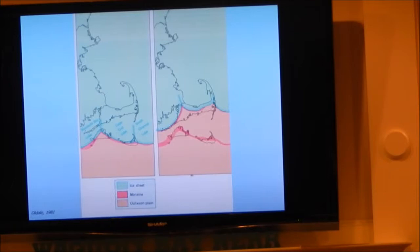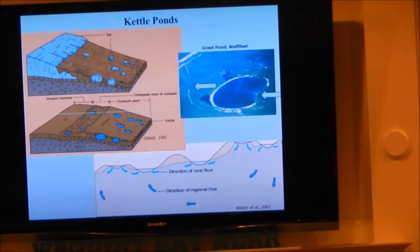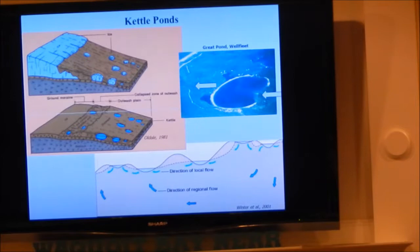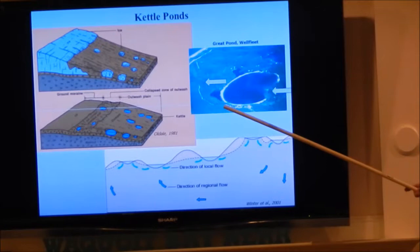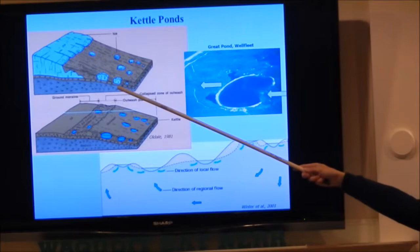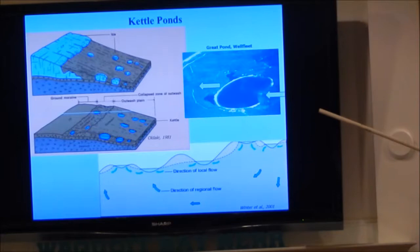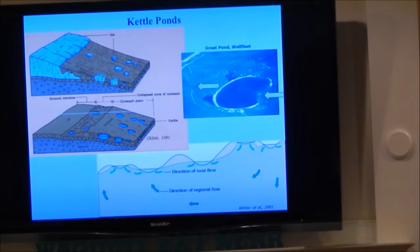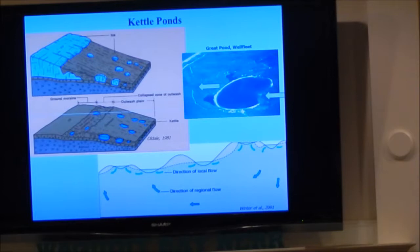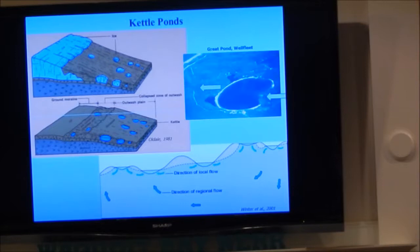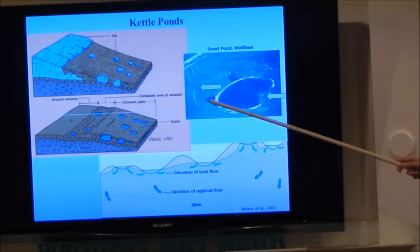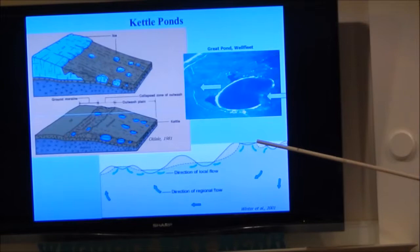Other interesting features left behind when the ice sheet retreated include kettle ponds. Chunks of ice were left behind, and when they melted, they left depressions that filled up with water. Kettle ponds are called windows into the aquifer — they show us where the surface of the water table is. In most of them, groundwater flows in on one side and back into the aquifer on the other side on its way to the ocean.